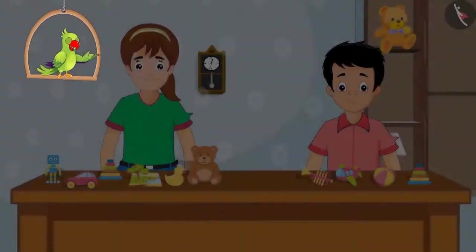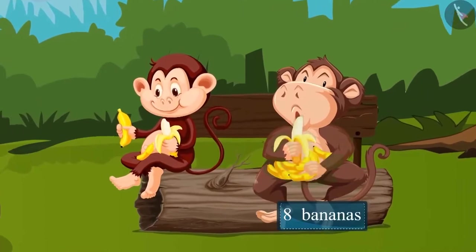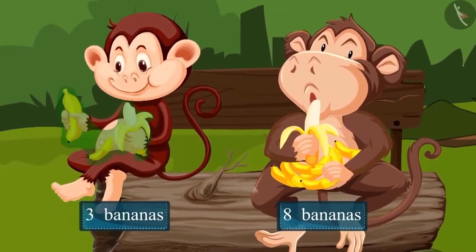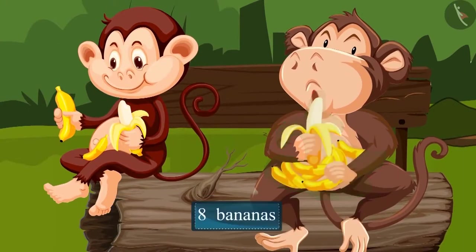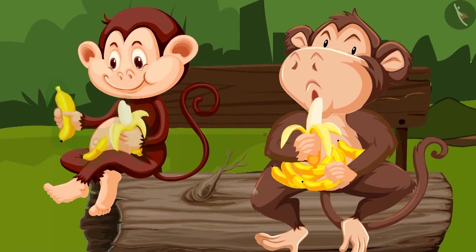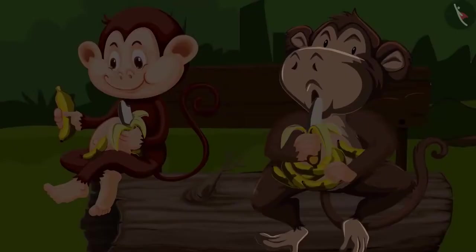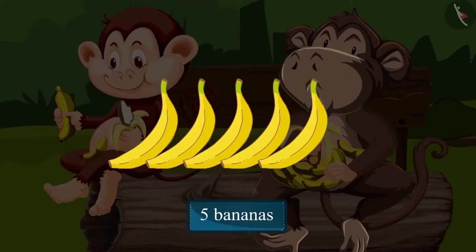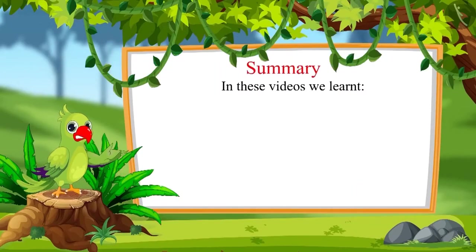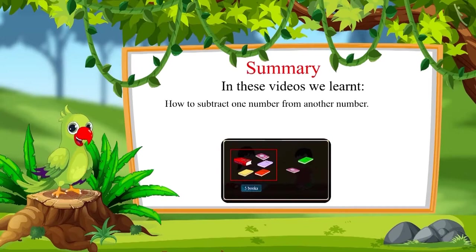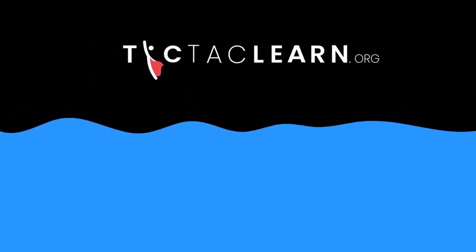Come on, let's see another similar example. The fat monkey has eight bananas and the thin monkey has three bananas. So, who has more bananas? Yes, the fat monkey has more bananas. And how many more? To find this out, we will have to subtract the number of bananas the thin monkey has from the number of bananas the fat monkey has. On subtracting three from eight, we are left with five. So the fat monkey has five more bananas than the thin monkey. Understood? So that was all for today. In these videos, we learned how to subtract one number from another number. Bye, friends. Thank you.